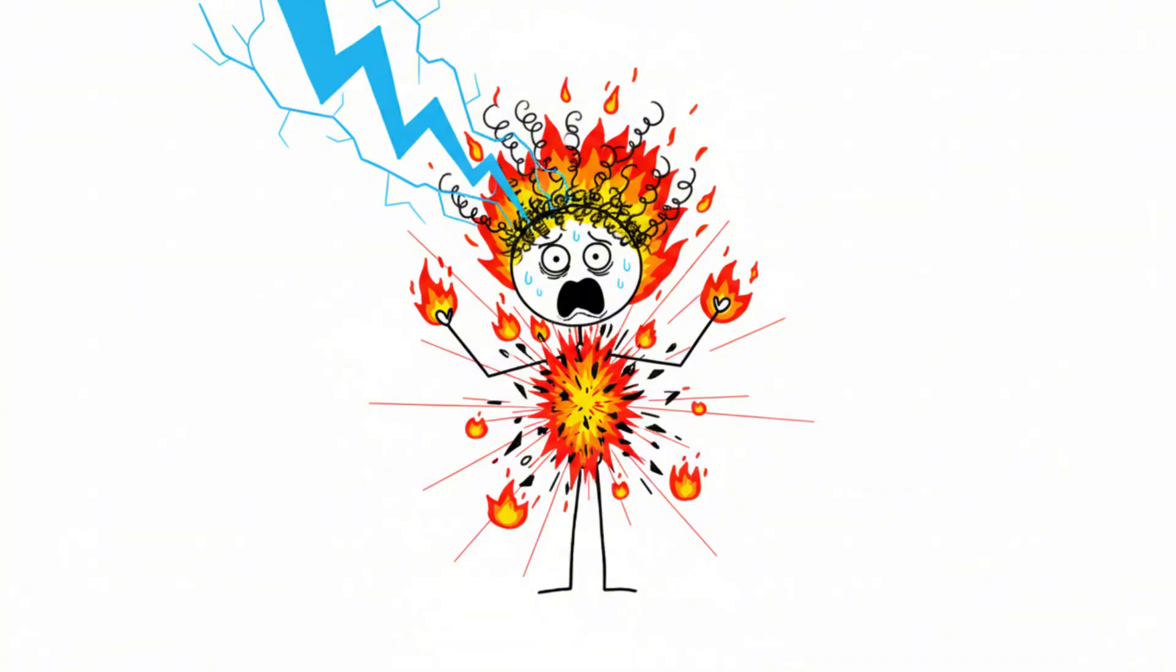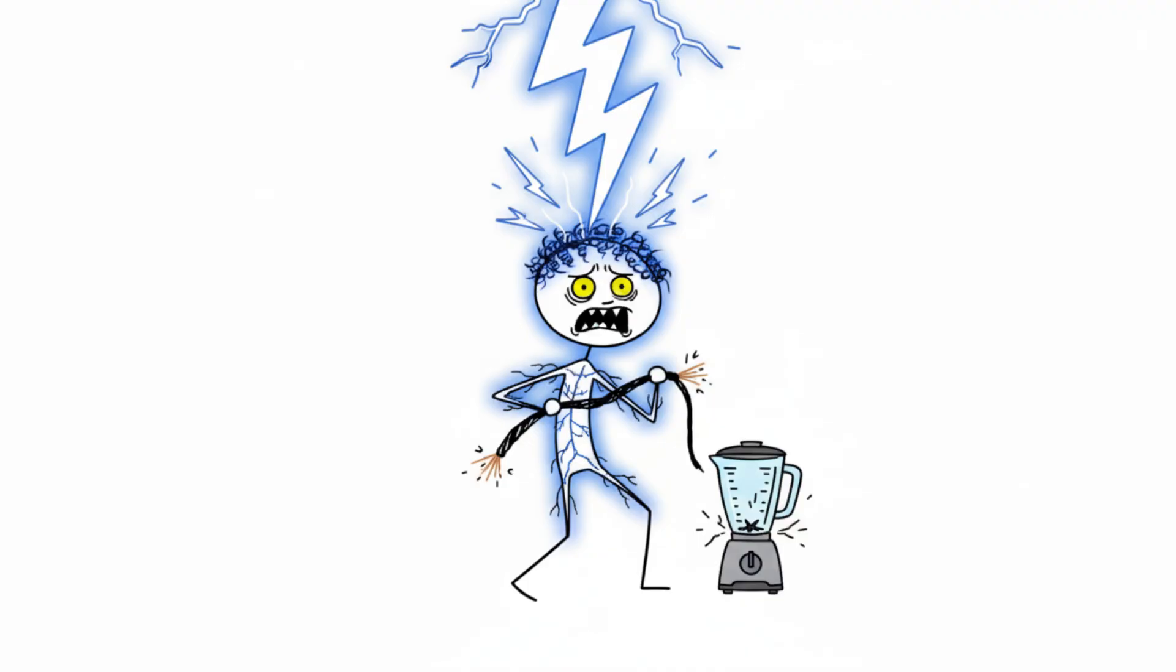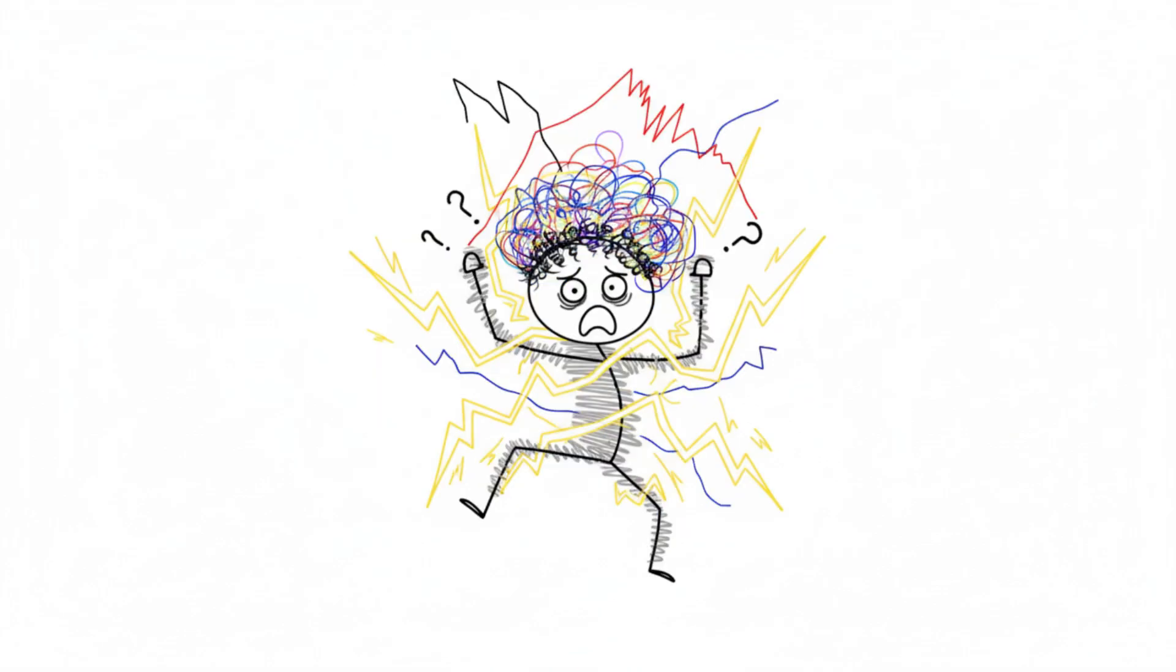7. Instant Nervous System Meltdown. Your brain and nerves are basically a bundle of electrical wires wrapped in meat, and lightning is like plugging a blender into a nuclear reactor. When the strike hits, your nervous system gets hijacked by the overload, which can cause seizures, memory loss, or even make you forget how to speak for hours or days.